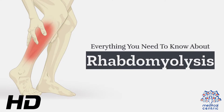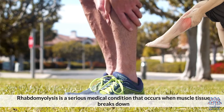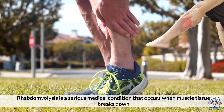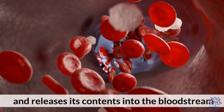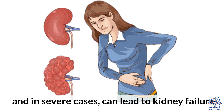Welcome to our video on everything you need to know about rhabdomyolysis. Rhabdomyolysis is a serious medical condition that occurs when muscle tissue breaks down and releases its contents into the bloodstream. This can cause damage to the kidneys and, in severe cases, can lead to kidney failure.